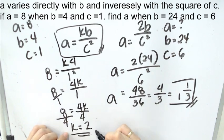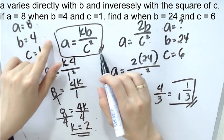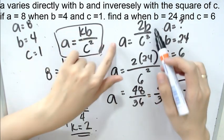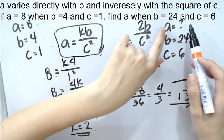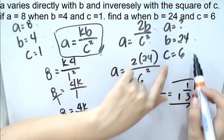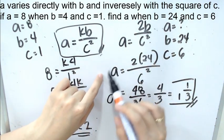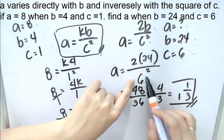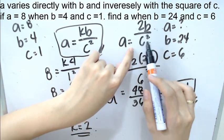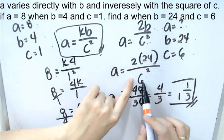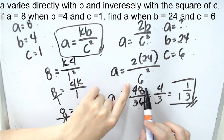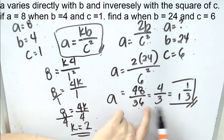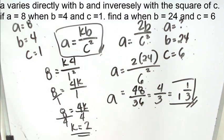After finding the value of k, we write the formula earlier, but this time around, we change k into 2, the value that we have earlier. And then we read the next statement. The next statement tells us that a is missing, b is 24, and c is 6. Afterwards, we substitute to find the value of a. We have here, b is 24, and c is 6. We have here, c as square. Take note, don't forget. When we need to square it, we need to square it. If c is 6 here, 6 square is 36, and 2 times 24 is 48. Afterwards, we reduce it into simplified version. And then, we can use 4 thirds, or we can also use 1 and 1 third as our final answer.